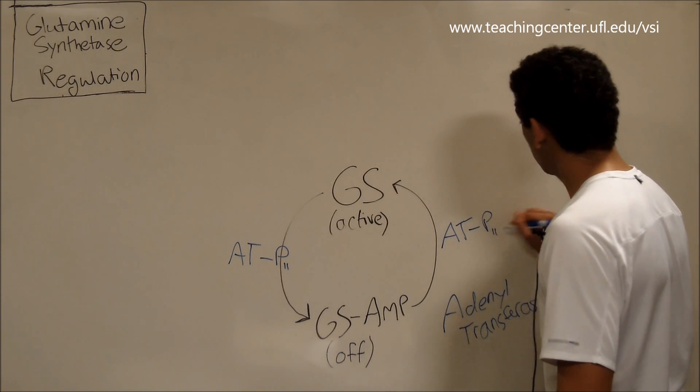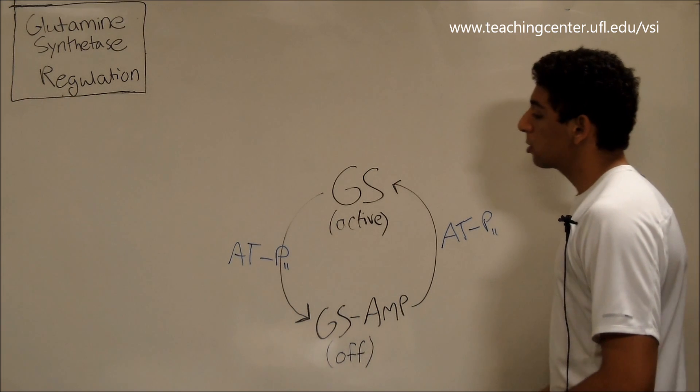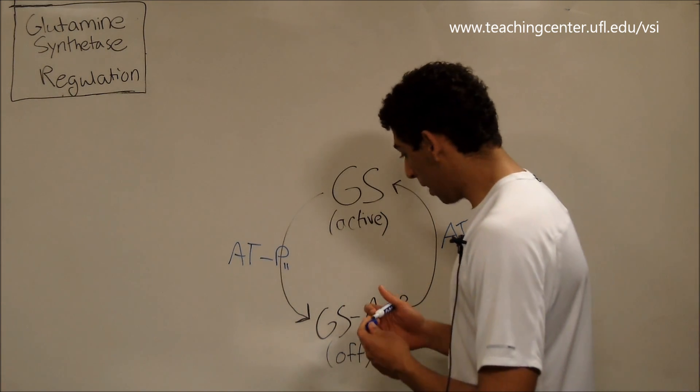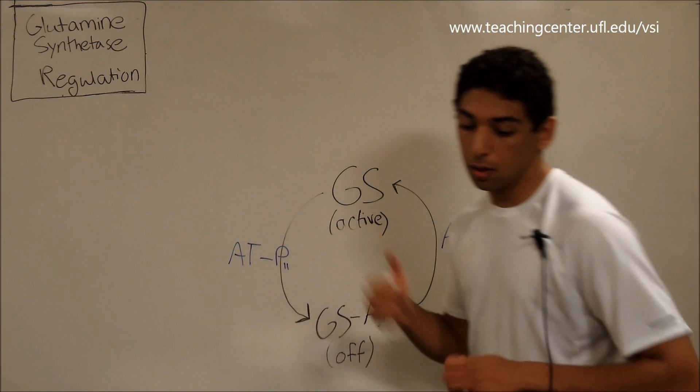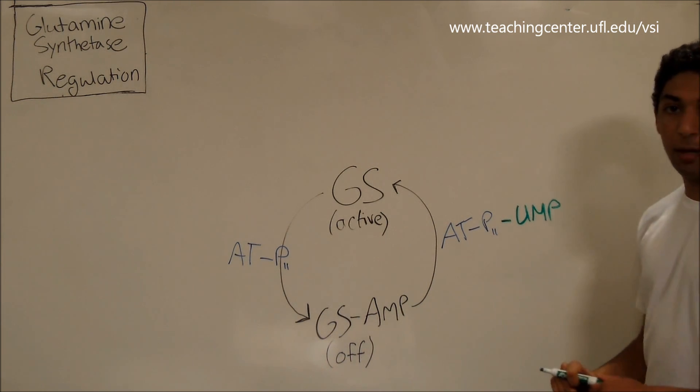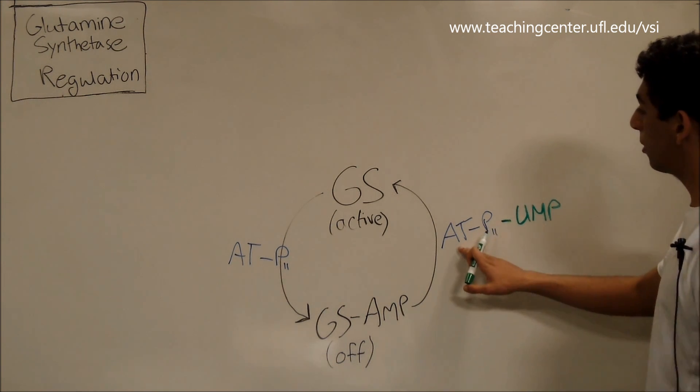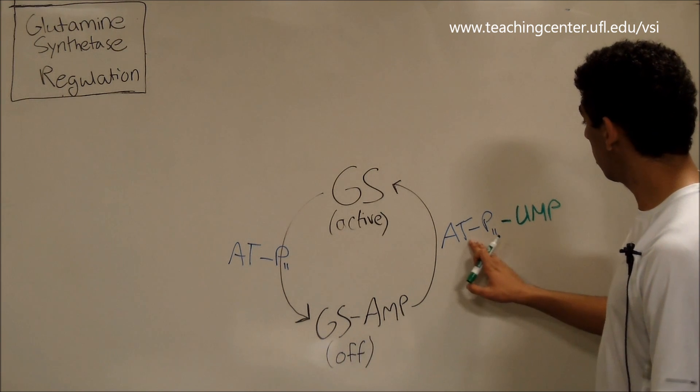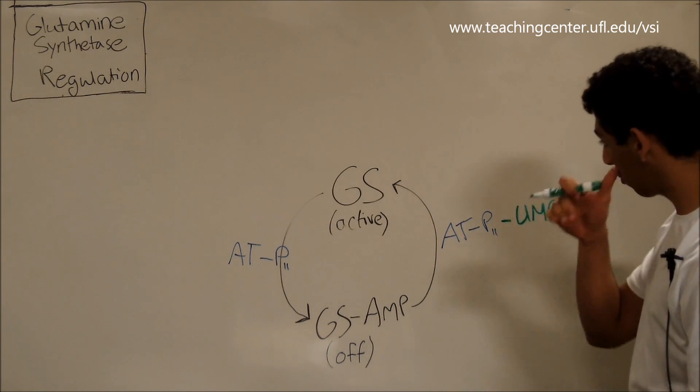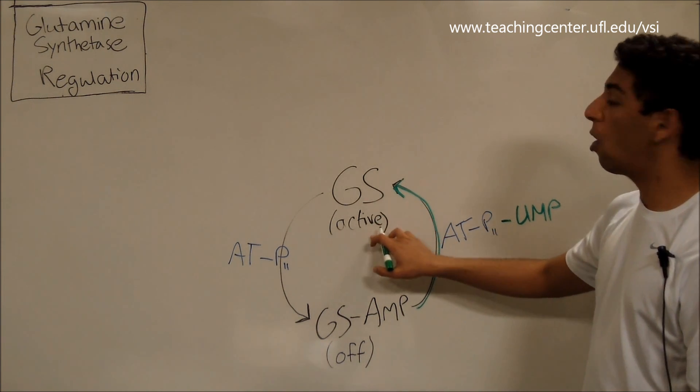They're the enzyme adenyl transferase with a P2 molecule on it. I'm going to erase this name just because it's making some clutter. So now we have adenyl transferase with a P2 on it. The difference is that when it has a UMP attached to it. UMP is just like AMP, but with a uracil instead of an adenine. So we've got adenyl transferase with a regulatory molecule on both sides. But when it has the UMP attached to the regulatory molecule, it's going to turn glutamine synthetase on.